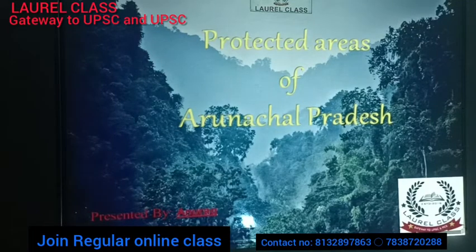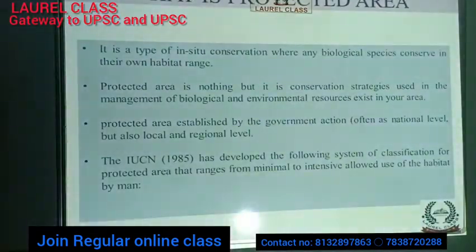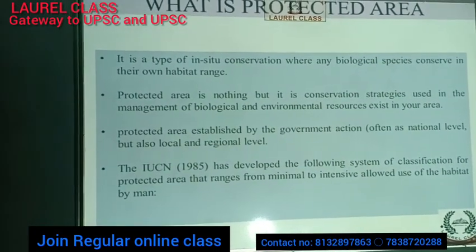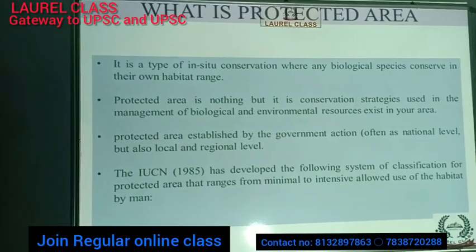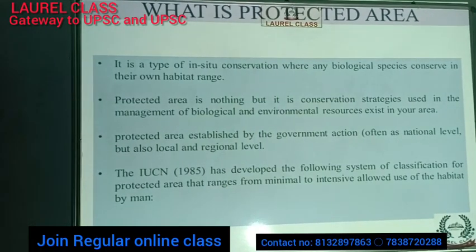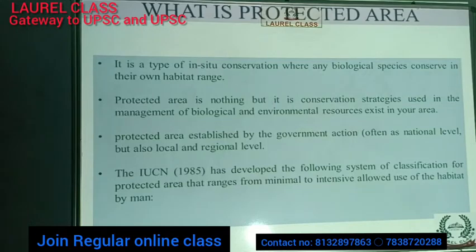First, we'll see what is a protected area. It is a type of in-situ conservation where any biological species are conserved in their own habitat range. In-situ conservation is where any species — like flora or fauna — are conserved in their own habitat. National parks, biosphere reserves, and wildlife sanctuaries are all called in-situ areas.